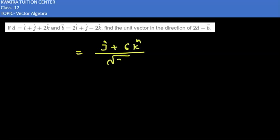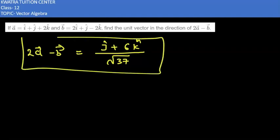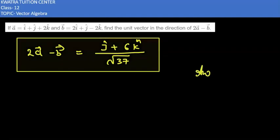This is the value of the unit vector in the direction of 2a vector minus b vector. This is the required solution.